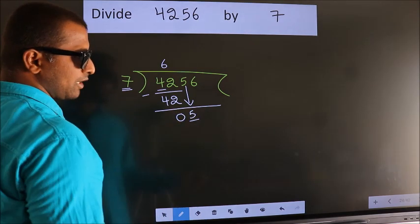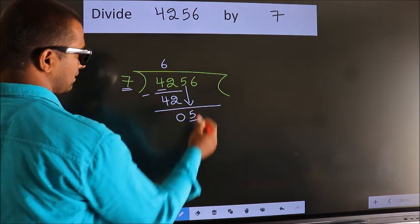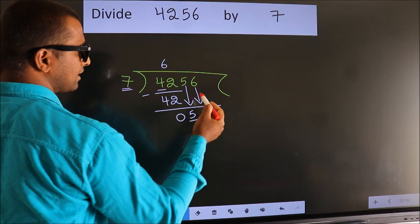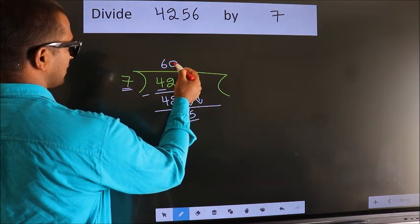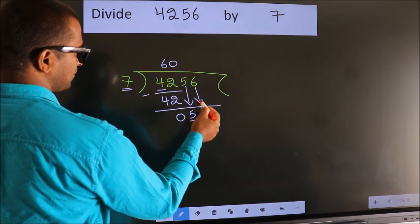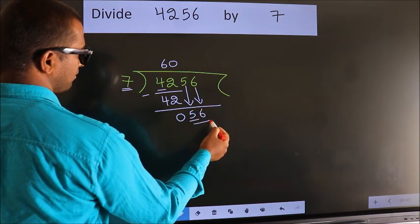So we should bring down the second number. And the rule to bring down the second number is to put 0 here. Then only we can bring down this number. So, 56.